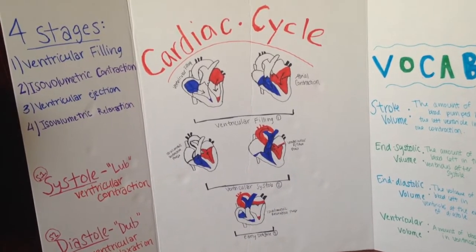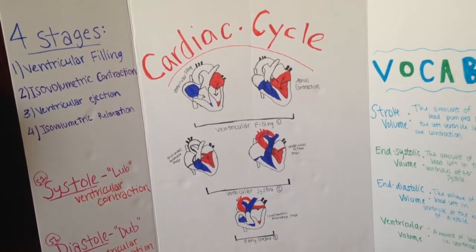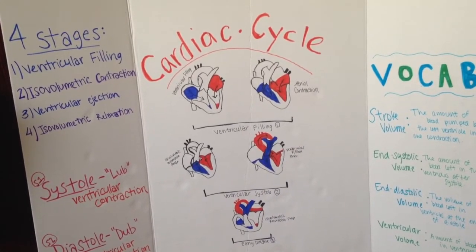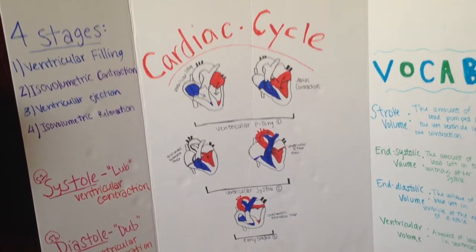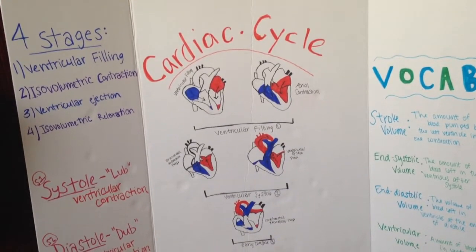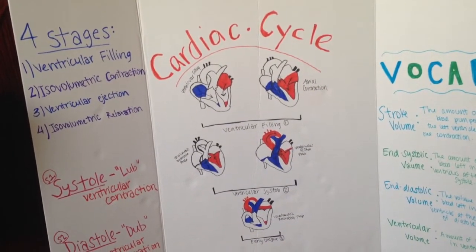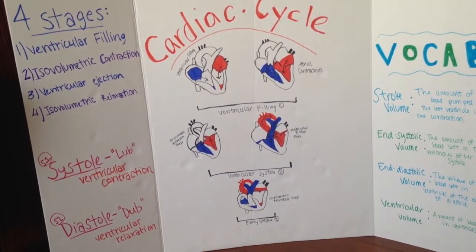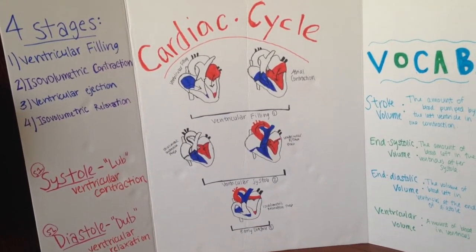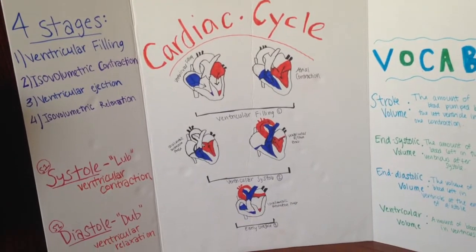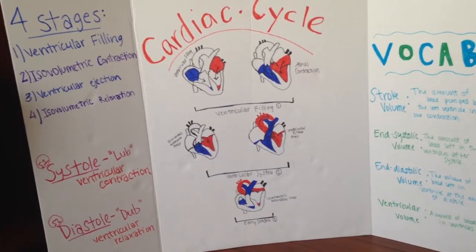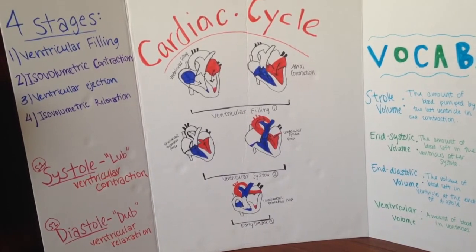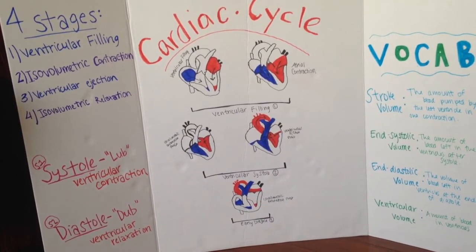The cardiac cycle has four stages. The first of which being ventricular filling. In this stage, the ventricles are passively filling with blood, and very soon the SA node will fire, which will cause the atria to depolarize and contract, forcing any additional blood into the ventricles. The ventricles now contain something called end-diastolic volume, which is the volume of blood within the ventricles after ventricular diastole.